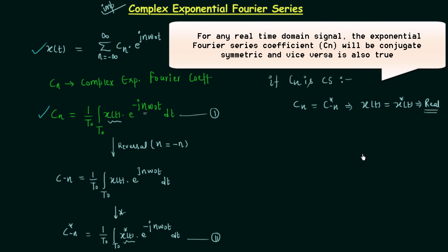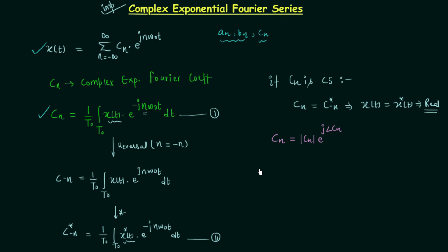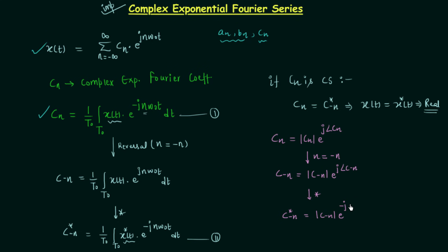Now we will move to the next point. We write cₙ as the magnitude of cₙ times e raised to power j·∠cₙ, since cₙ is a complex coefficient with two parts: the magnitude |cₙ| and the angle ∠cₙ. After performing the reversal we have c₋ₙ equal to |c₋ₙ| times e raised to power j·∠c₋ₙ. Performing the conjugate operation gives c₋ₙ conjugate equal to |c₋ₙ| times e raised to power minus j·∠c₋ₙ, with the negative sign due to conjugation. Let's call these equations 3 and 4.